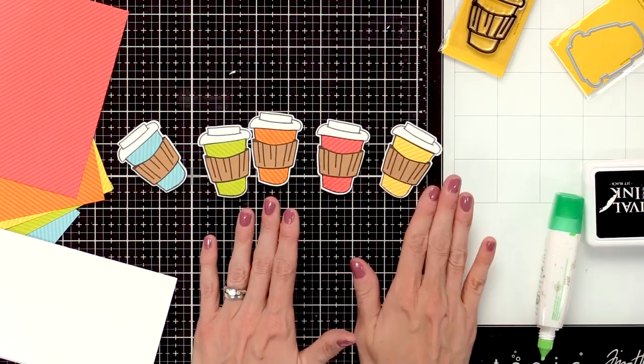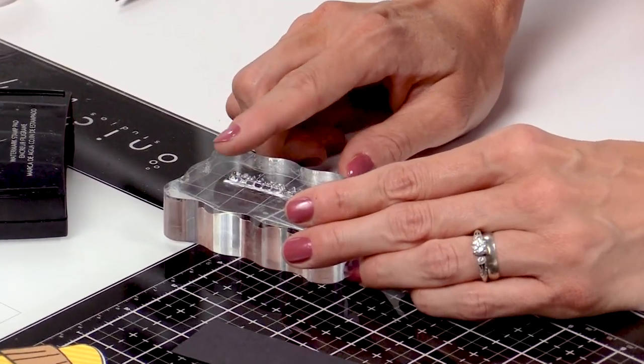Now my rainbow of coffee cups is done. Now all I have to do is stamp my sentiment. I've got my sentiment from the Coffee Time stamp set mounted onto an acrylic block.